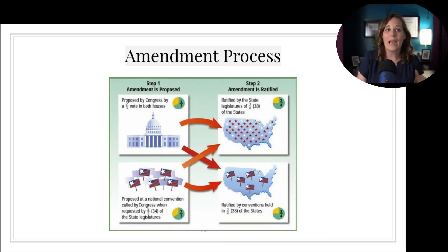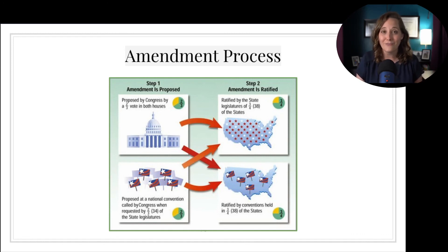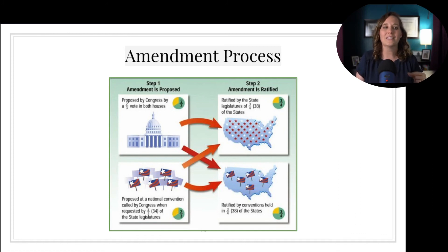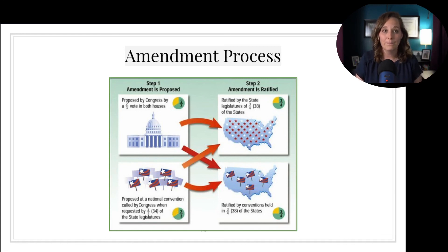One of the things the framers were able to build into the Constitution in Article 5 was the amendment process. In the Articles of Confederation, the entire legislative body had to unanimously agree to any changes — and considering they couldn't even get Rhode Island to show up to the convention, a unanimous vote was unlikely. The Constitution sets up a two-step process: first, get a two-thirds majority of both chambers of Congress or two-thirds of state legislatures to propose the amendment; second, get three-quarters of either state legislatures or state conventions to ratify that change.